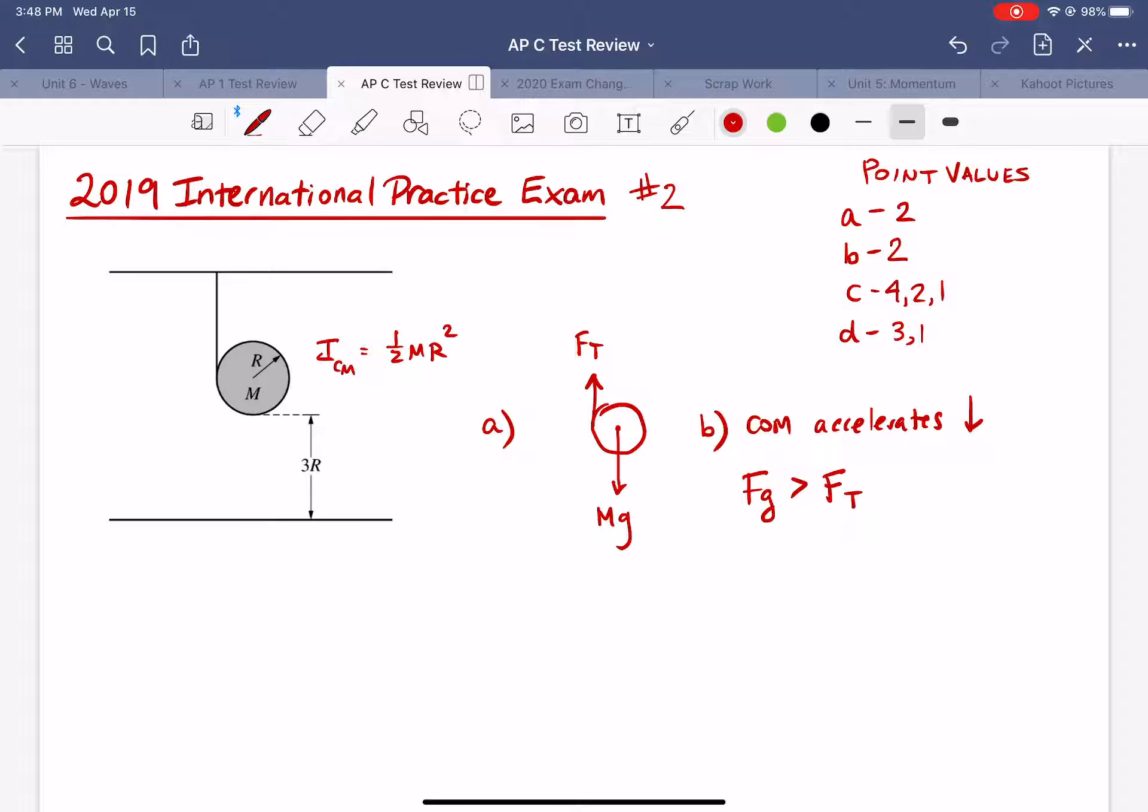Okay so part C we're going to start having to actually calculate things. So we're asked to derive an expression for the acceleration of the disk as it falls. So the first thing I will point out here before I go into any calculations is that we already know immediately a range for our possible answers. So you should be able to convince yourself that A must be between two values and those values are 0 and G.